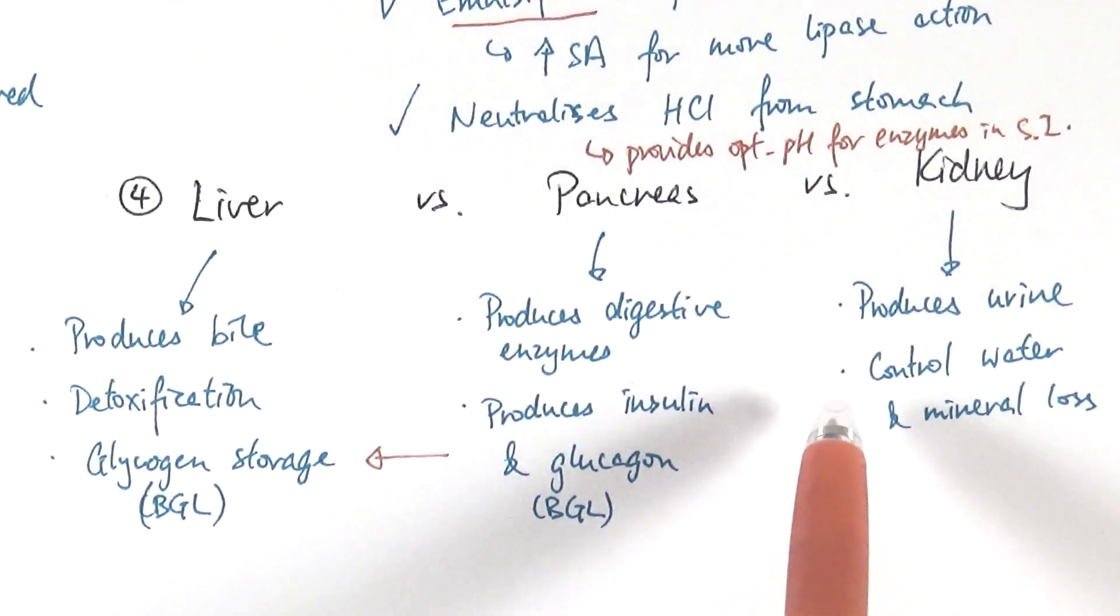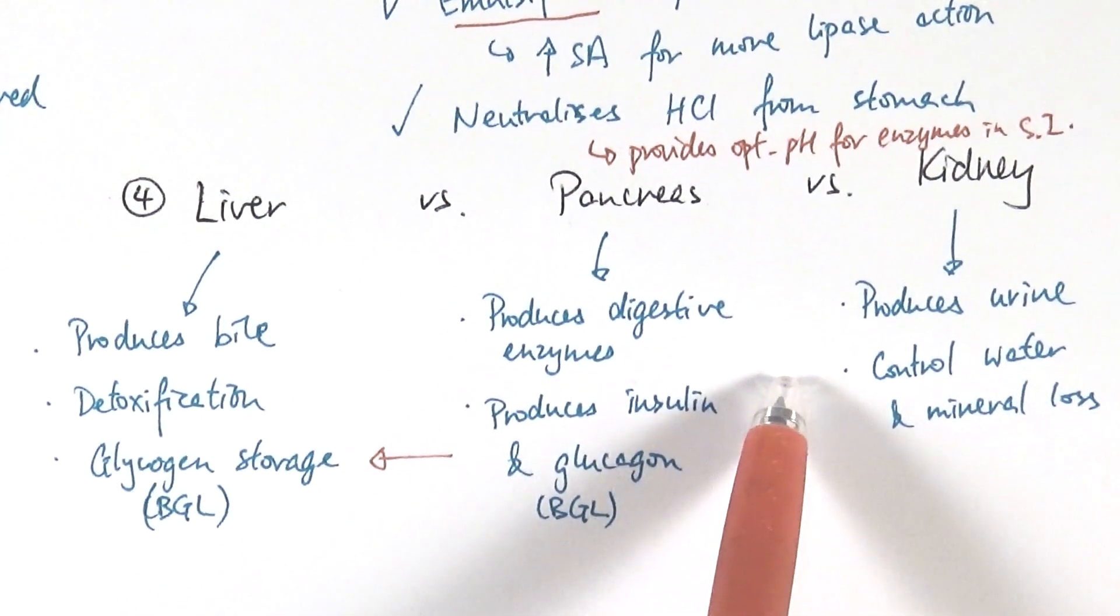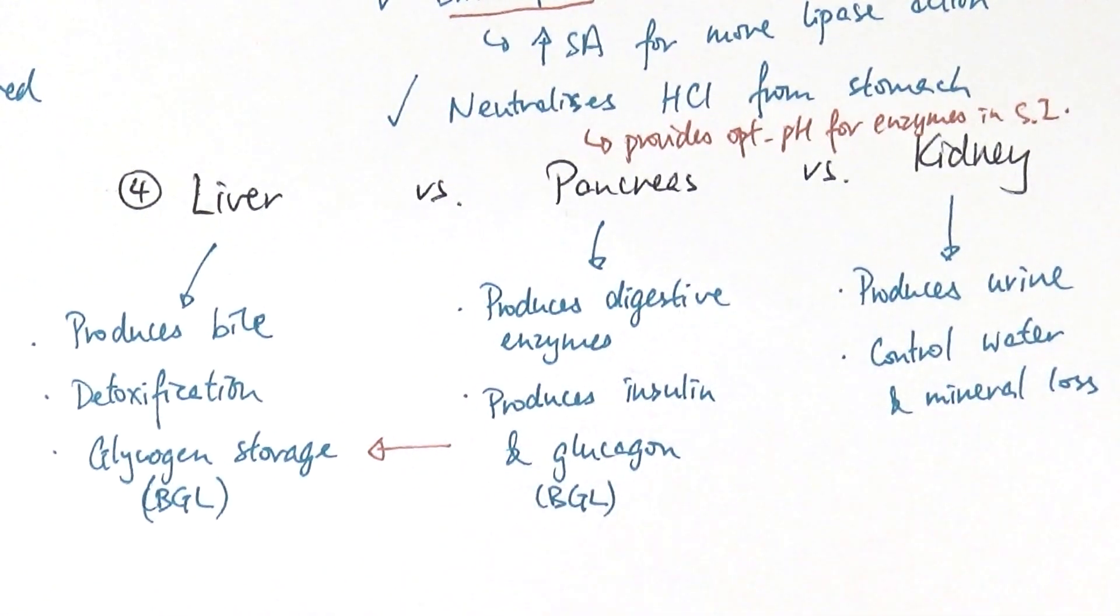Lastly is the kidney. That's almost completely unrelated. It produces urine. So it's the organ that actually filters your blood and make sure that you get rid of the urea, which is bad for your body, and also any excess water and mineral ions. So it controls water and mineral ion levels in the body.